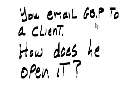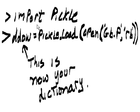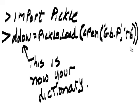You email gb.p to a client. How does he open it? Import pickle. dow = pickle.load(open('gb.p', 'rb')). 'rb' is reading in binary. gb.p is the file.